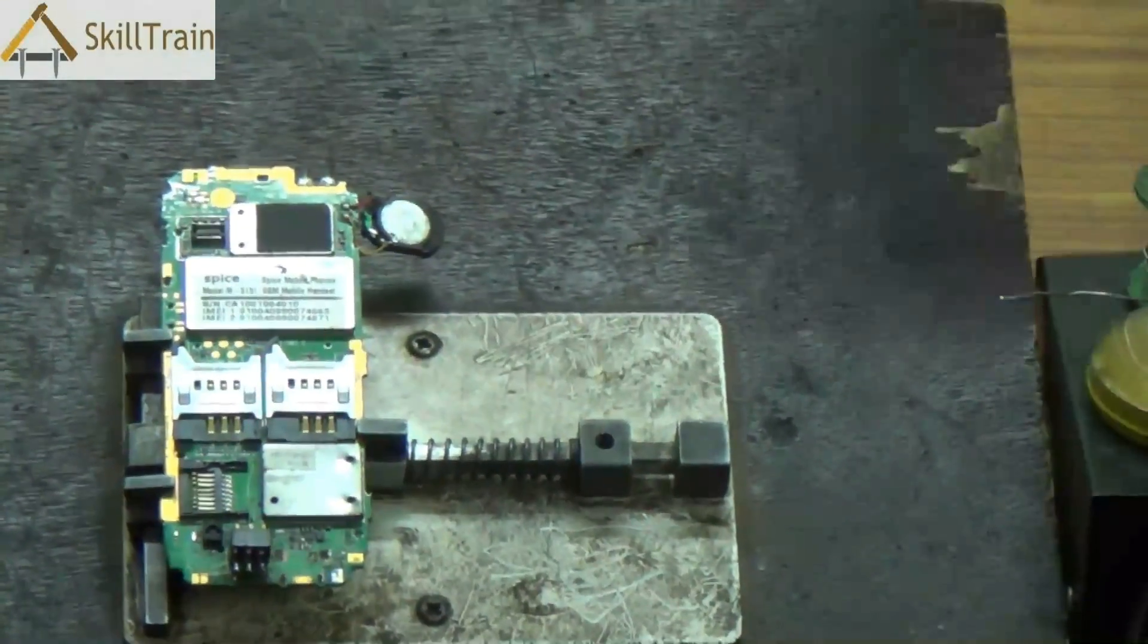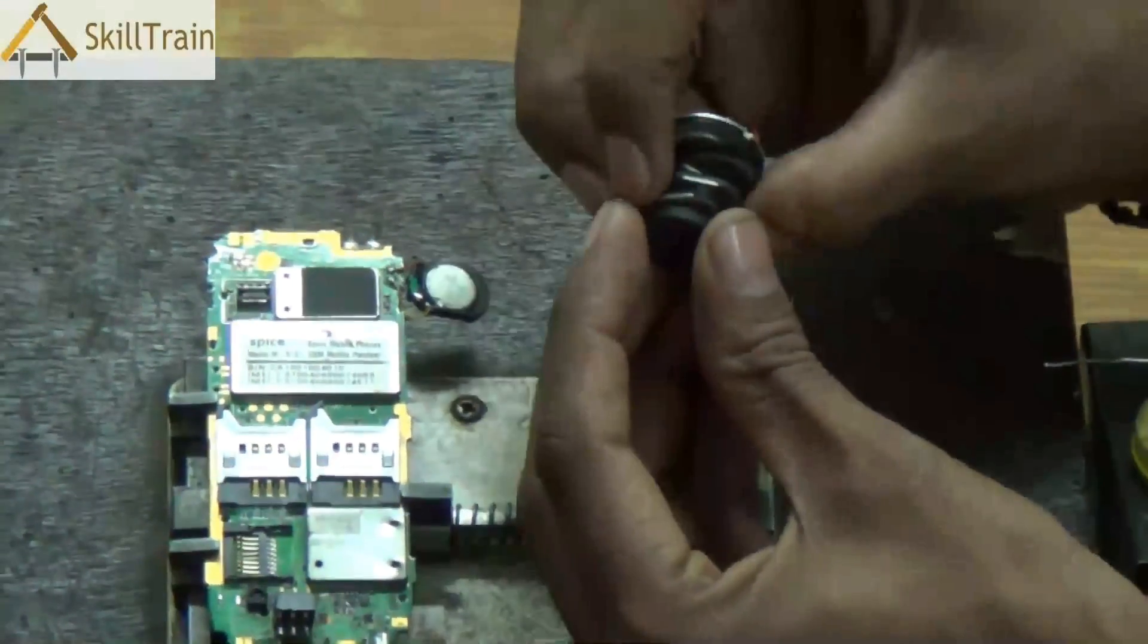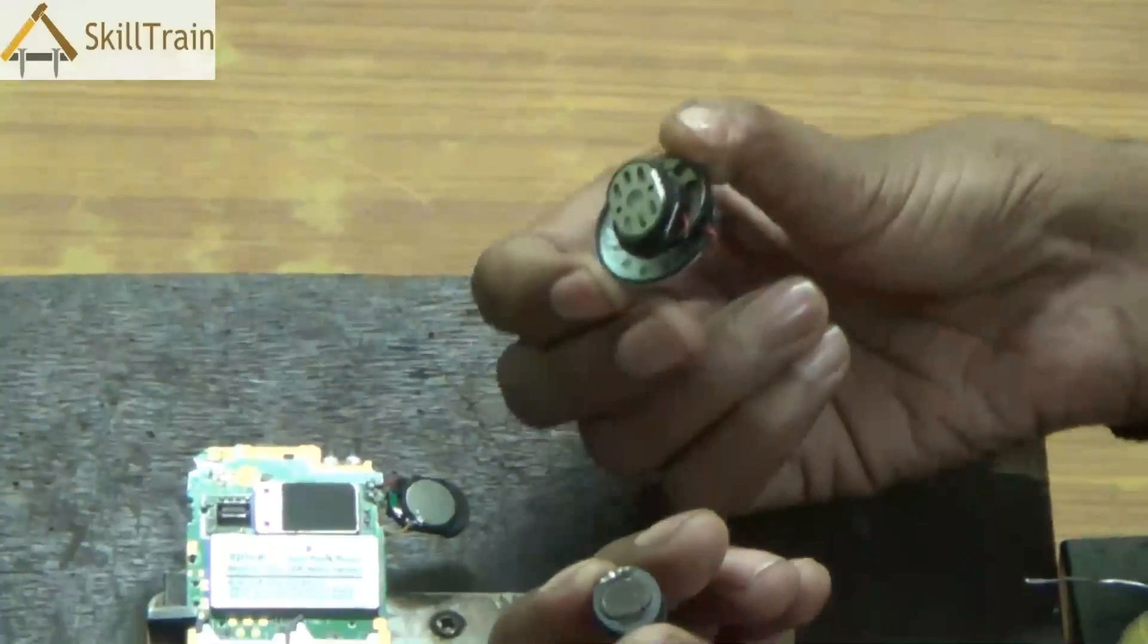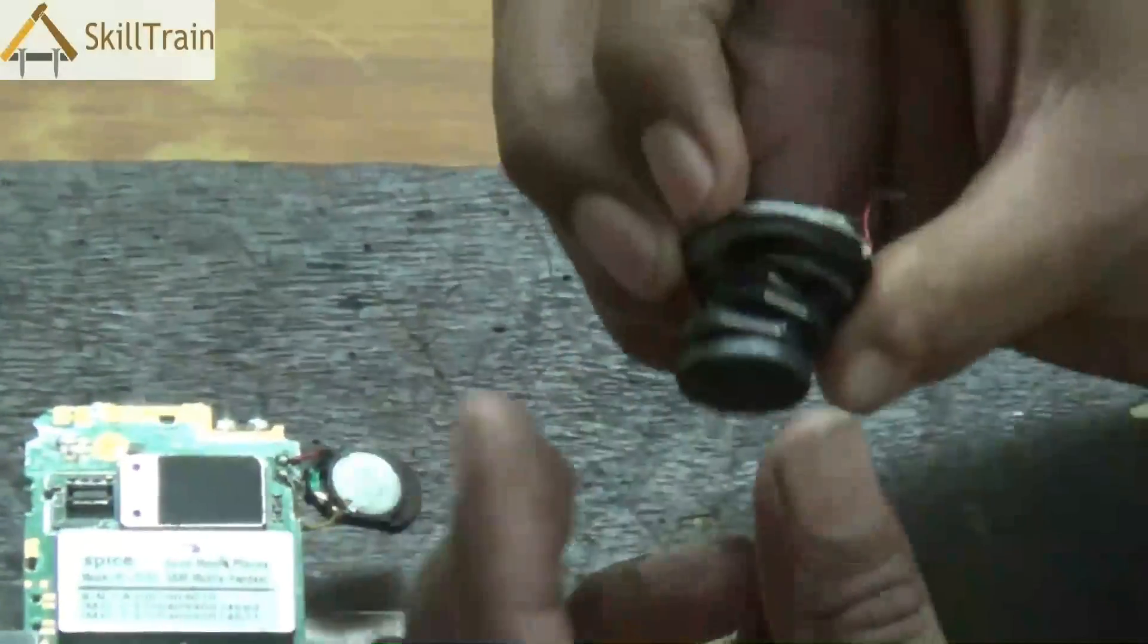The ringer also has a magnet in it. Like any other speakers, it has a magnet in it and that shows that this is the ringer component that emanates or that gives out the sound whenever somebody is dialing your number or calling you on your mobile phone.